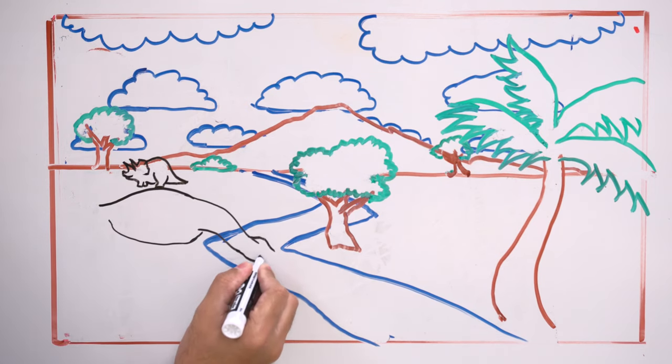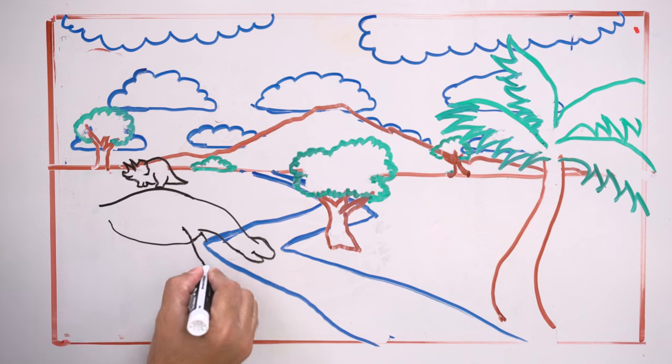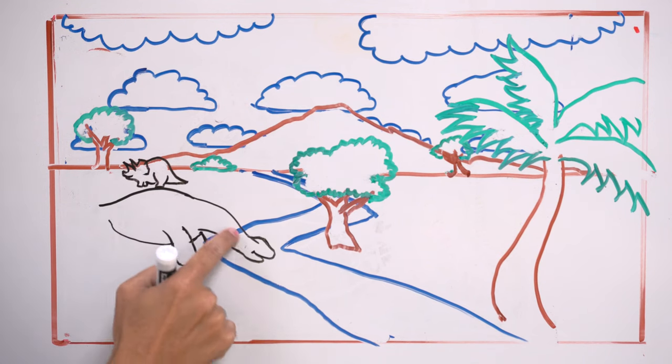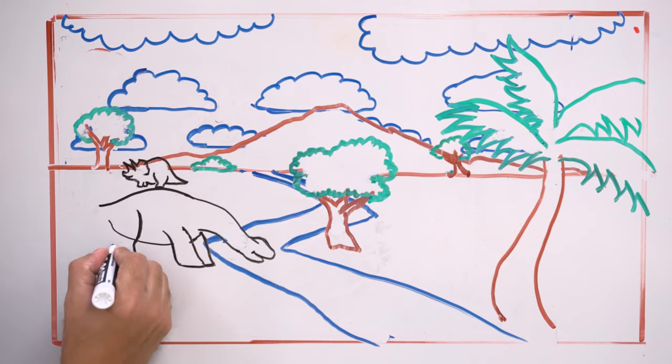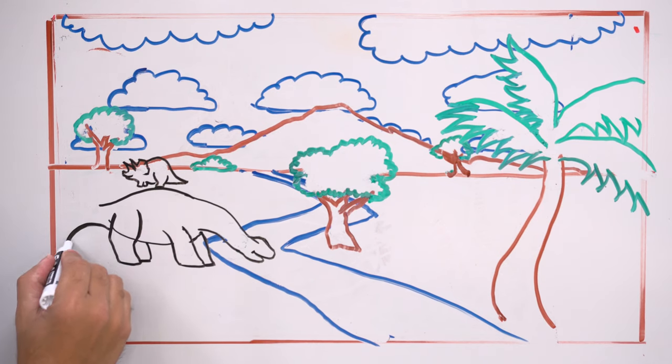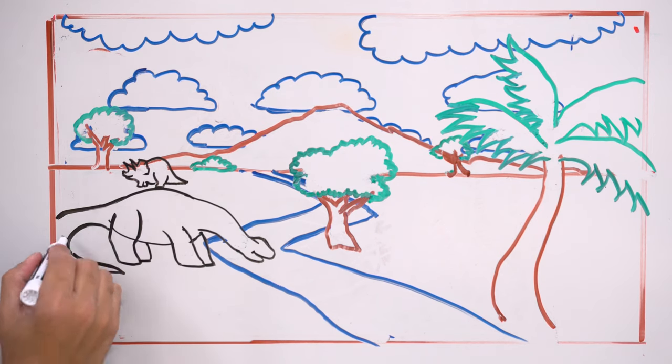Let's do this brontosaurus. It's getting bigger as you can see because it's in the middle ground. Not too far. Not too close. But definitely bigger than the triceratops in the back.